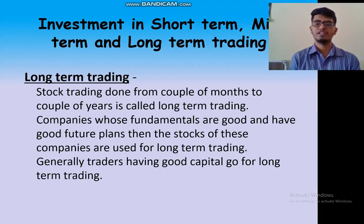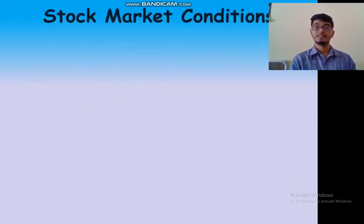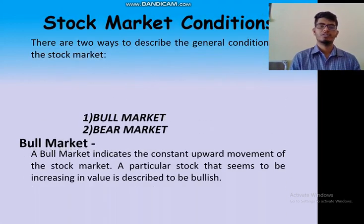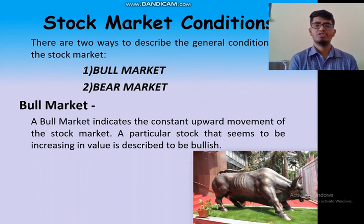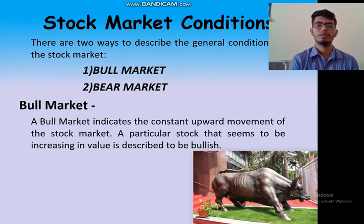Generally traders having good capital go for long term trading. So people who have good capital can go for long term trading. Here is the stock market condition. There are two ways to describe the general condition of the stock market: bull market and bear market.